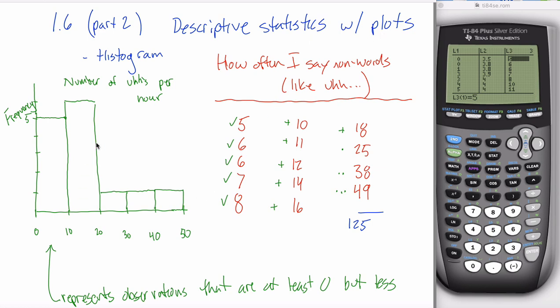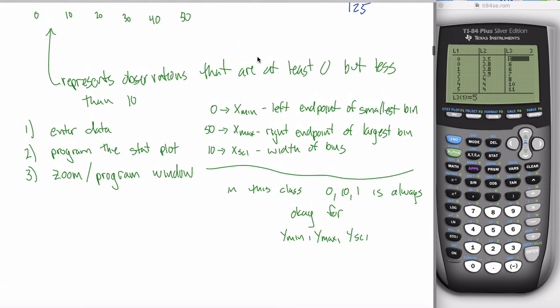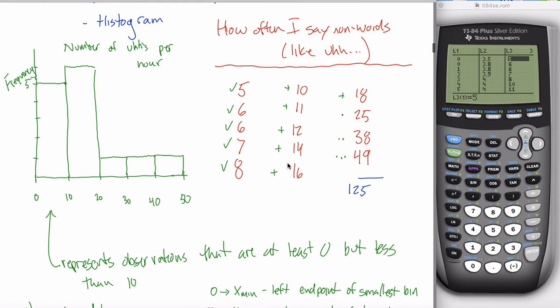In the previous two videos, we made histograms and a stem and leaf plot. In this video, we're going to make a different type of plot called a box plot. This will be the last of the three plots we learn in 1.6 part 2. The idea is still that we're trying to summarize data with a picture, as opposed to just numbers like in 1.6 part 1.